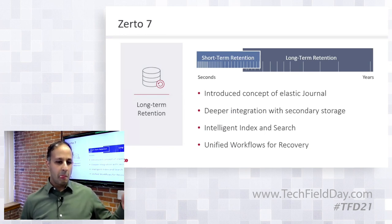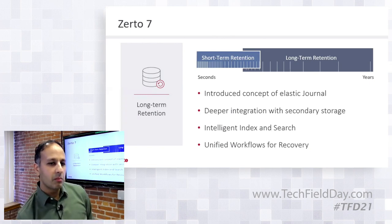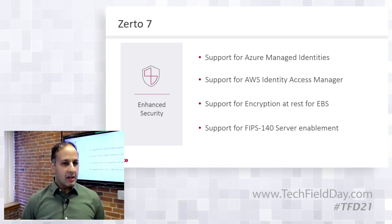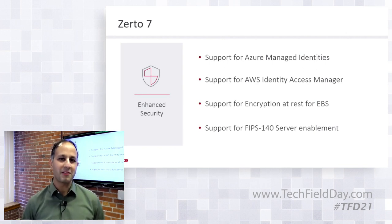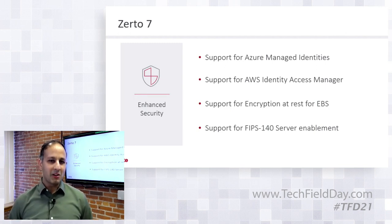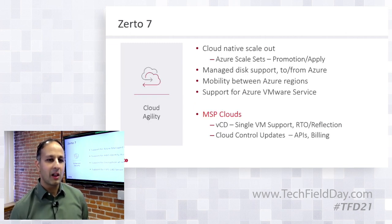We're capturing data at a micro interval but able to keep it at a macro interval for years — a real shift in thinking by combining disaster recovery and long-term retention. Security is top of mind: for the cloud platform we integrated with Azure AD managed identities, IAM on the AWS side, encryption at rest, and FIPS support. Recovering from ransomware is something we provide for many customers, but being secure ourselves was also absolutely critical. Security enhancements are a theme that will continue across future releases.